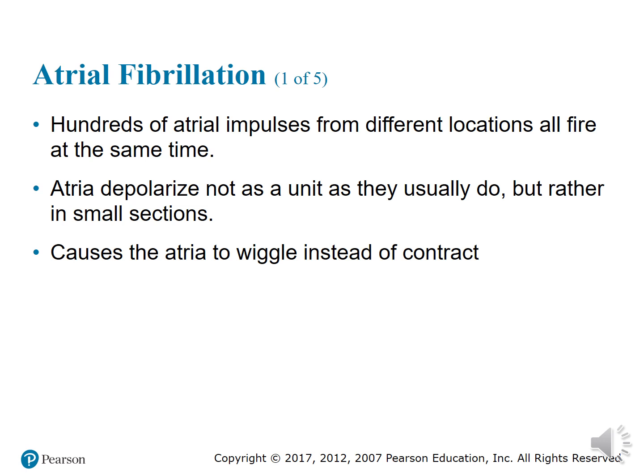With atrial fibrillation — or A-fib — irritable sites in the atria fire at a rate of 400 to 600 times per minute. These rapid impulses cause the muscles of the atria to quiver, meaning they don't fully get to relax. They fibrillate, resulting in an ineffective atrial contraction, decreased stroke volume, a subsequent decrease in cardiac output, and a loss of atrial kick.